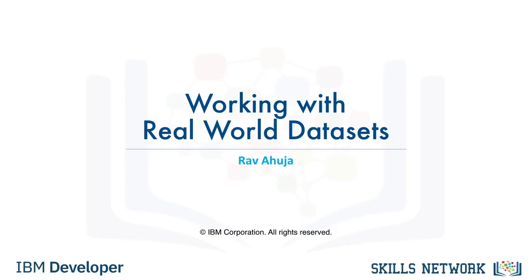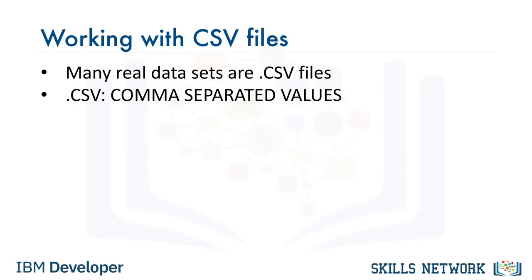Hello and welcome. In this video, we'll give you a few hints and tips for working with real-world datasets. Many real-world datasets are made available as .csv files. These are text files which contain data values typically separated by commas. In some cases, a different separator such as a semicolon may be used. For this video, we will use an example of a file called dogs.csv. Although this is a fictional dataset that contains names of dogs and their breeds, we will use it to illustrate concepts that you will then apply to real datasets.